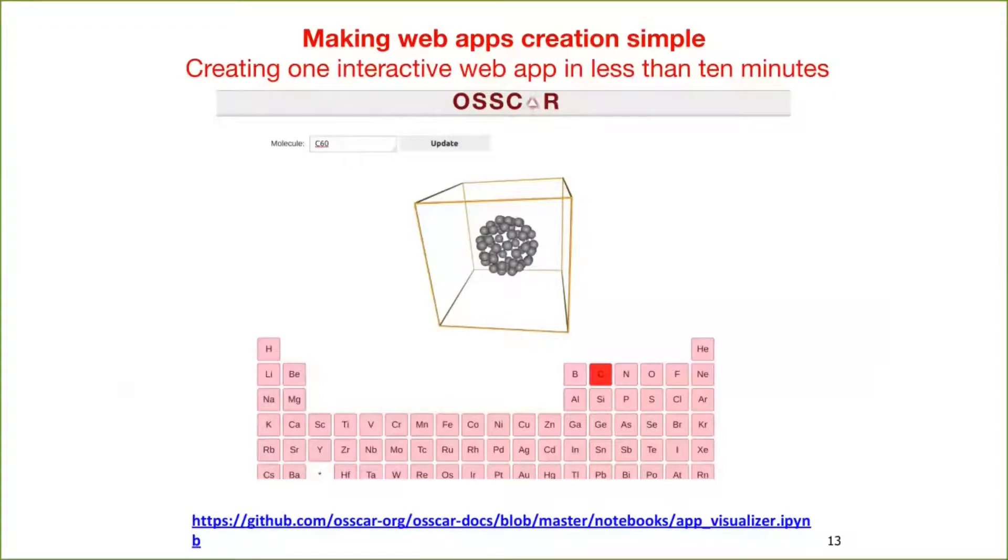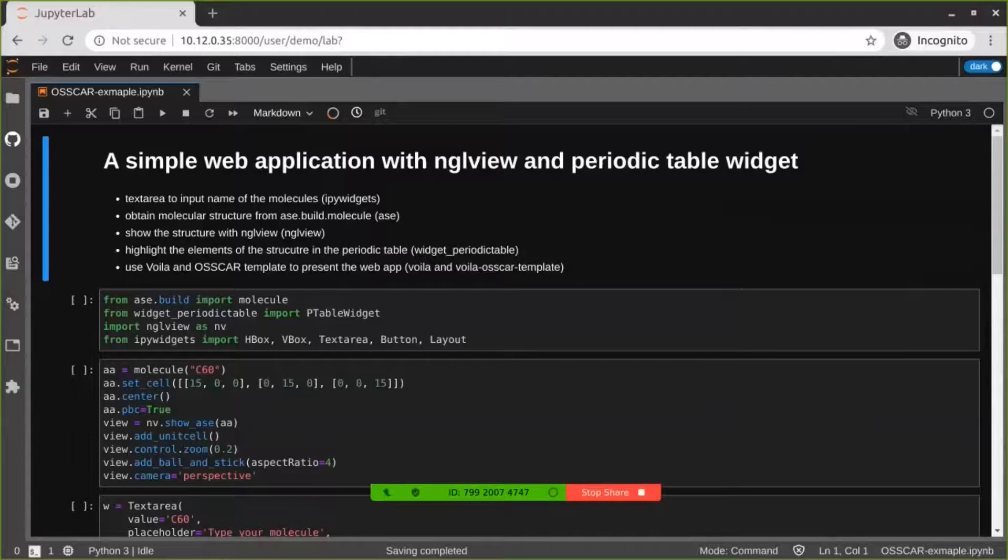Finally, I would like to show you how to create a web app with the widgets and Voila in less than 10 minutes. The web app is a simple structure builder and visualizer. Here, I will give you an example to use the NGLView and the periodic table widget to create a simple web application.